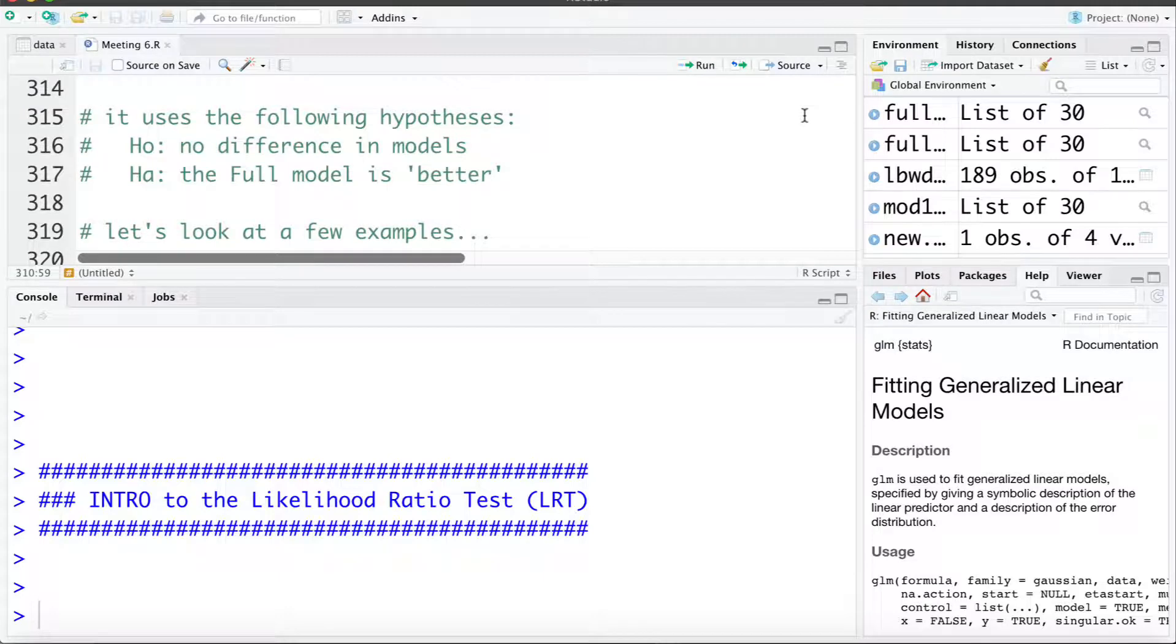Similar to the partial F test, it has the same null and alternative hypotheses. The null being that there's no difference in the full and the reduced model, the alternative being that the full model is statistically better than the reduced model.